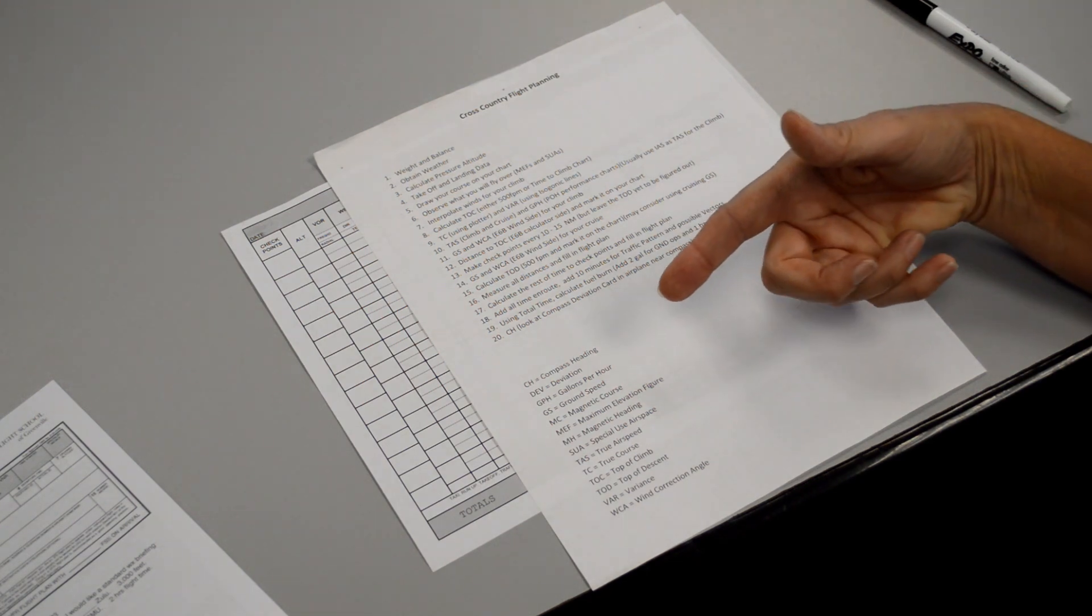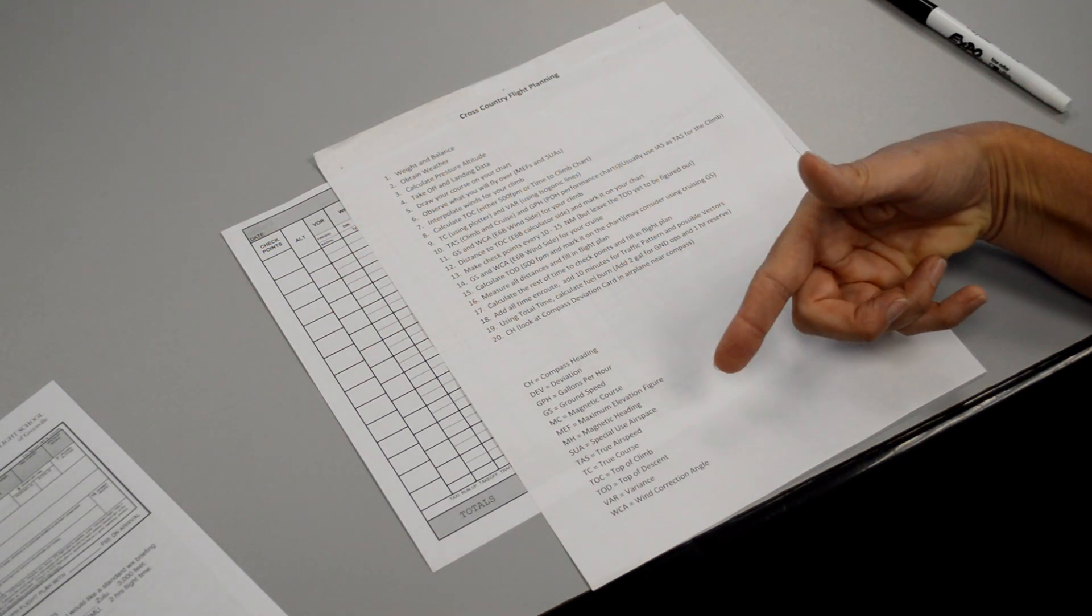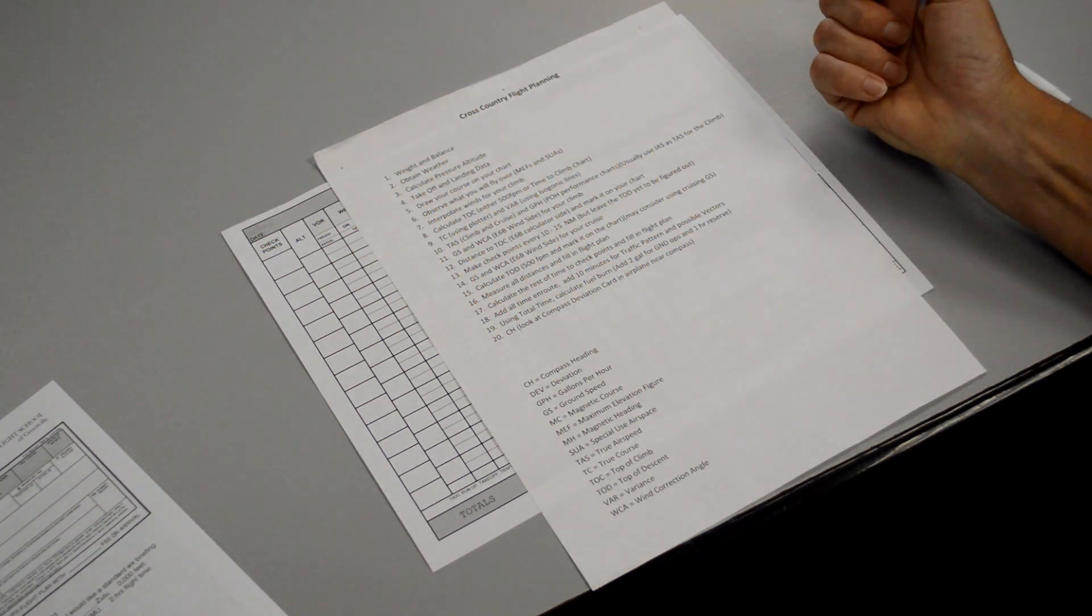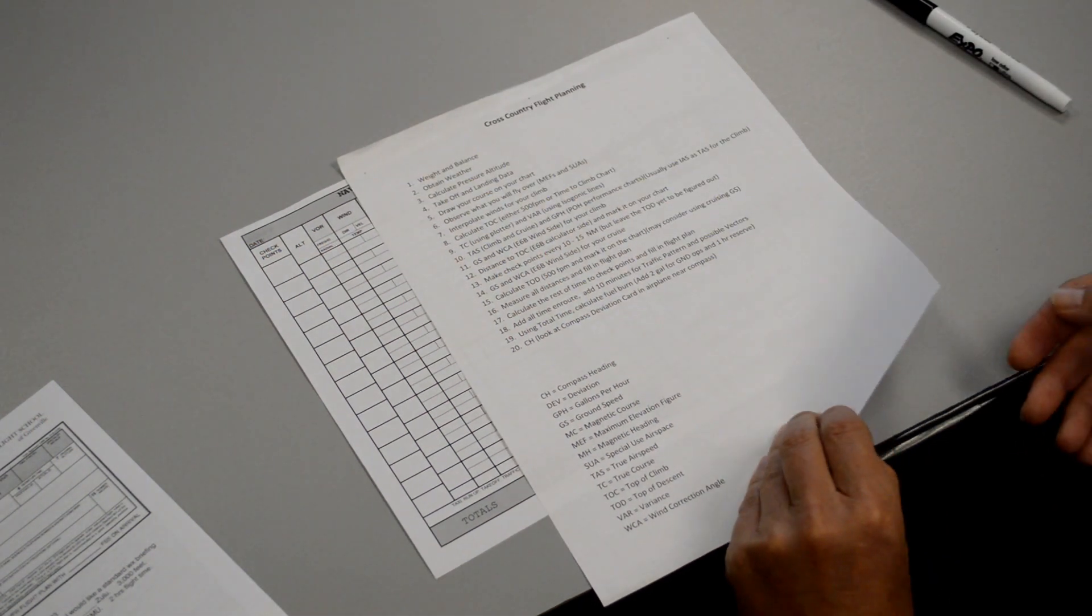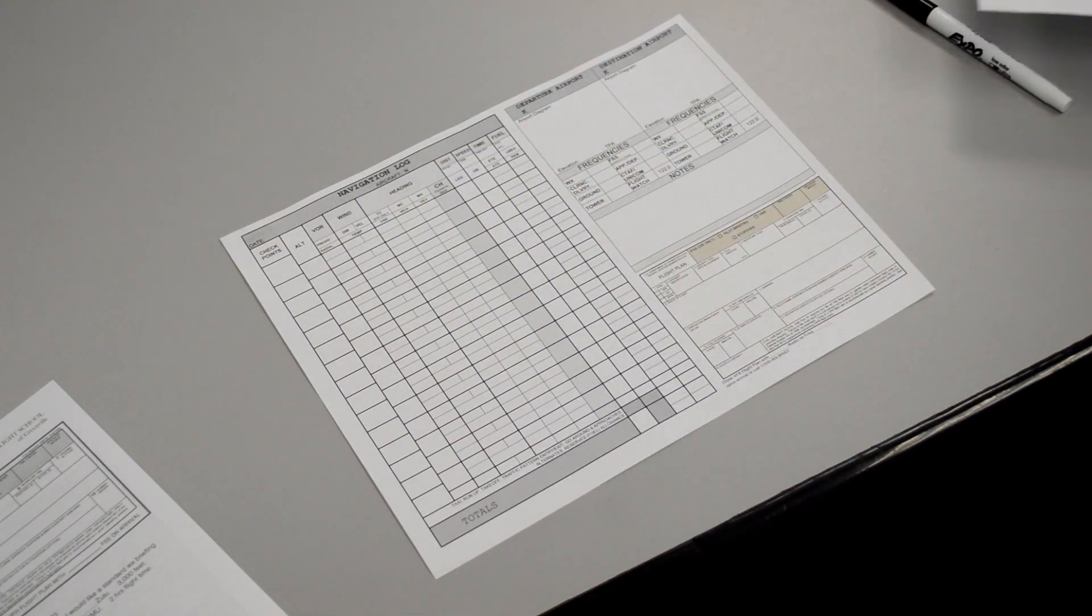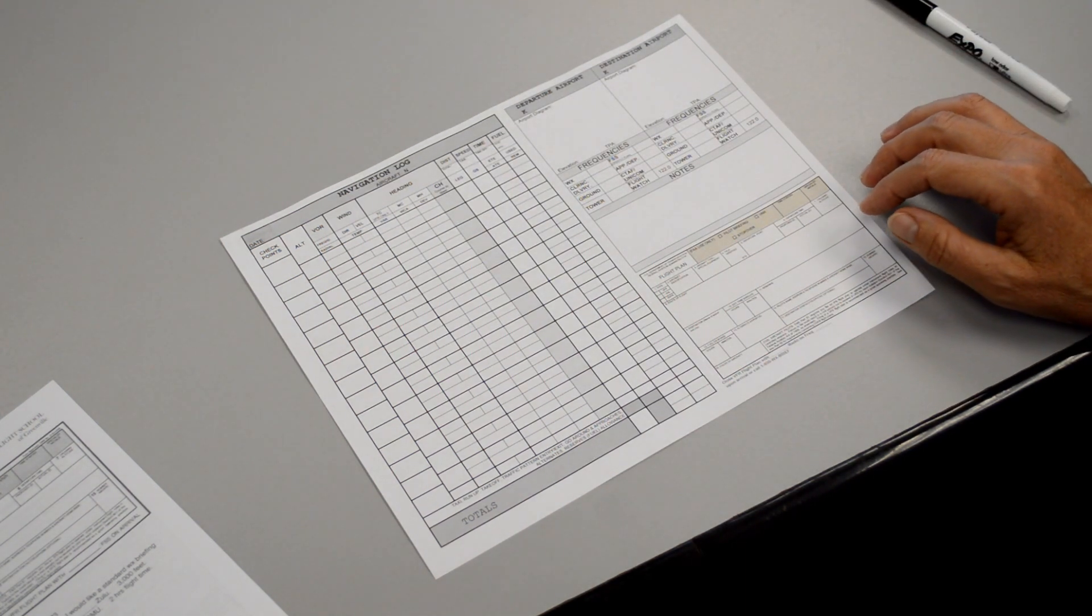In addition, I've put some commonly used abbreviations on the bottom of the page that you can refer to if you need to. Now all three of these sheets will be available to you by clicking on the link below in the description. Alright, let's begin step number one.